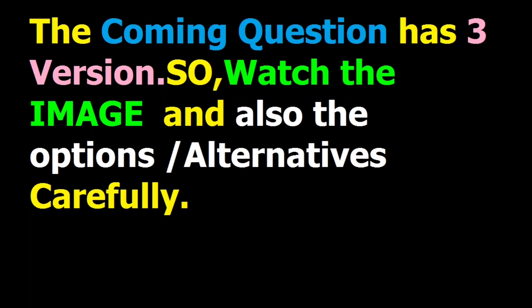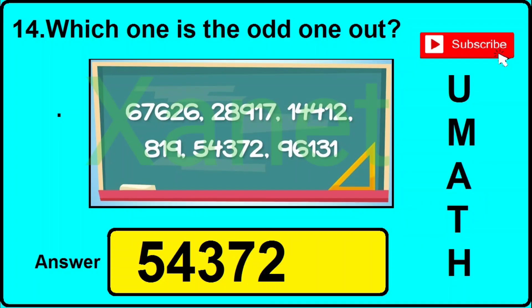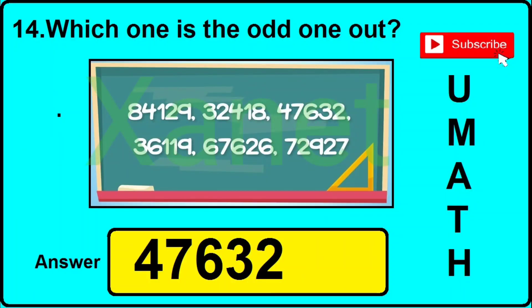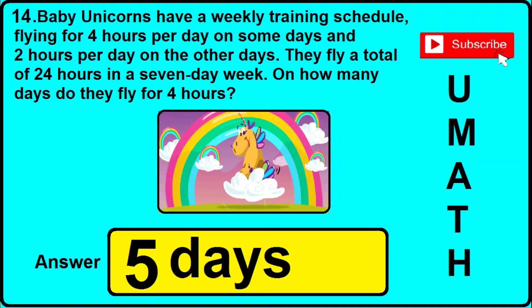The next question also has 3 different versions — watch the image and click the answer shown. Version 1: if the image starts with 67,626, the correct answer is 54,372. Version 2: the image starts with 84,129 and ends with 72,927 — the correct answer is 47,632. Version 3: baby unicorns have a weekly training schedule, flying 4 hours per day on some days and 2 hours on others, totaling 24 hours in a 7-day week — on how many days do they fly for 4 hours? The correct answer is 5 days.